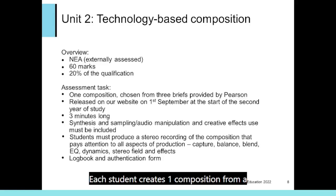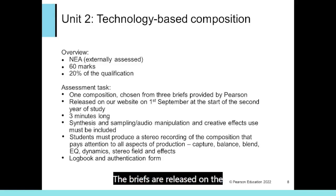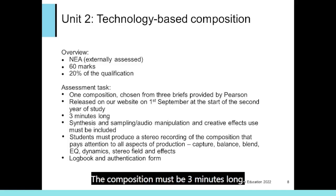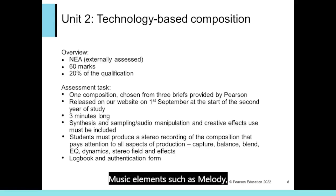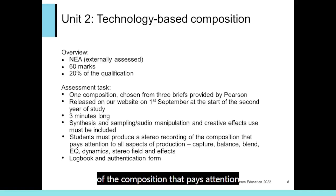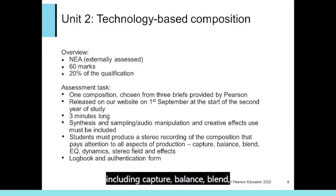Each student creates one composition from a brief chosen from three published by Pearson. The briefs are released on the 1st of September at the start of the second year of study. The composition must be three minutes long. Music technology must be central — in particular, synthesis, sampling and creative effects must be exploited creatively. Music elements such as melody, harmony and rhythm are also assessed. Students must produce a stereo recording paying attention to all aspects of the production, including capture, balance, blend, EQ, dynamics, stereo field and effects.